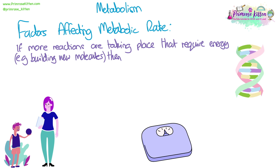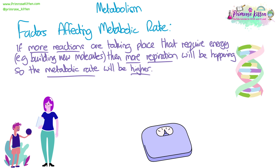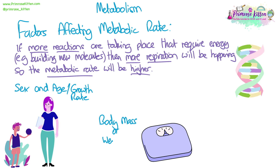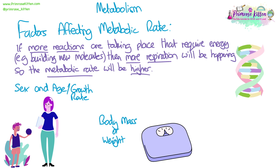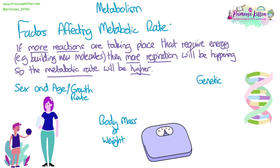If there are more reactions taking place in your body that require energy — for example, if you're building a lot of new molecules — then more respiration will be occurring to release more energy, so your metabolic rate is going to be higher. Sex, age, and growth rate can all contribute to changing metabolic rate; for example, children tend to have a higher metabolic rate than adults. Your body mass and genetics can also play a factor, as inherited genes from your parents may affect your metabolic rate.